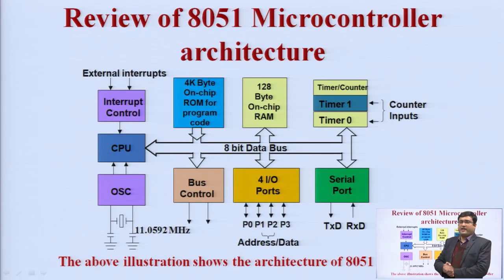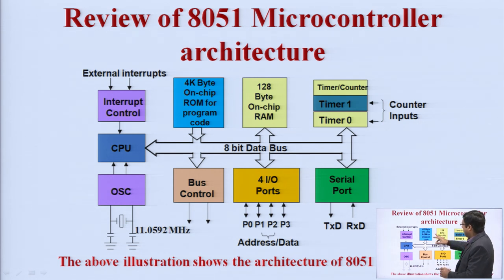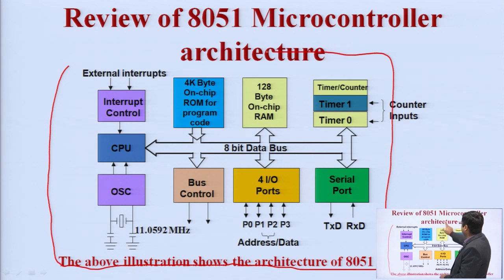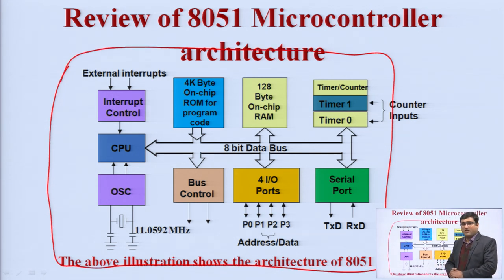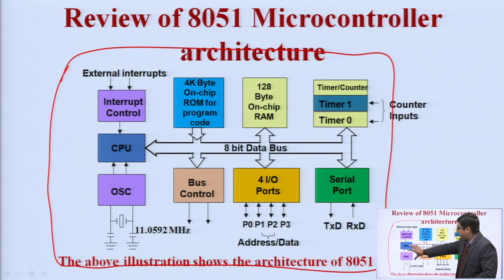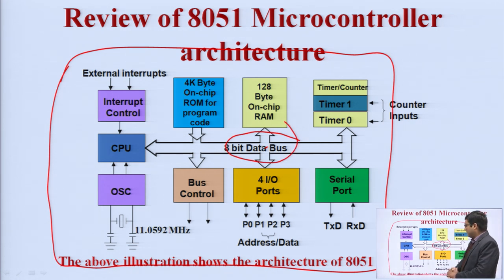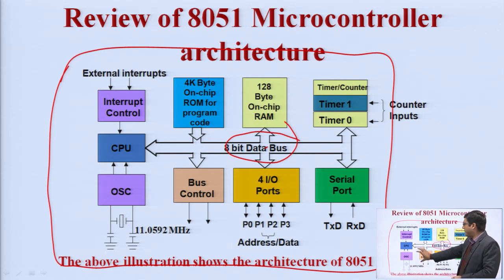Now, coming to the review of the 8051 microcontroller architecture. This is a block diagram of the 8051 microcontroller, where all components are integrated on the same chip. For the CPU — the central processing unit — all operations are carried out through it; it is the brain of the computer. It has an 8-bit data bus, so it works on 8 bits of data at a time. All devices integrated on the microcontroller chip share a common 8-bit data bus. We also have control circuits and interrupts — basically 6 interrupts: 3 external, 2 internal, and 1 reset.